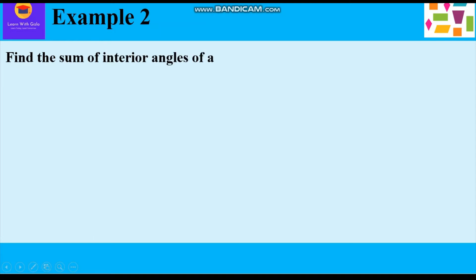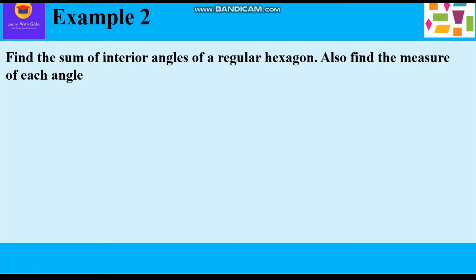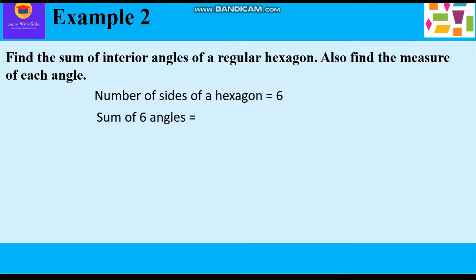Now let us take up Example 2. Find the sum of interior angles of a regular hexagon and also find the measure of each angle. The number of sides of a hexagon is 6. The sum of interior angles is given by the formula (N minus 2) times 180 degrees, where N minus 2 represents the number of triangles that can be formed, multiplied by 180 degrees since the sum of angles of a triangle is 180 degrees.